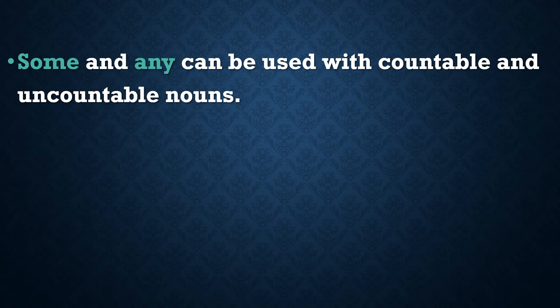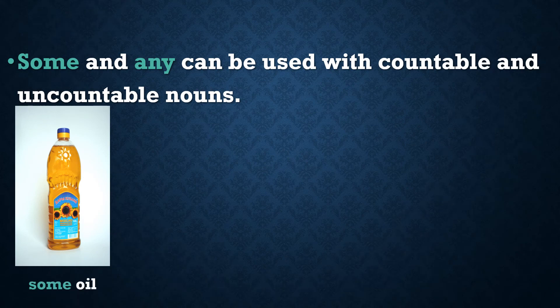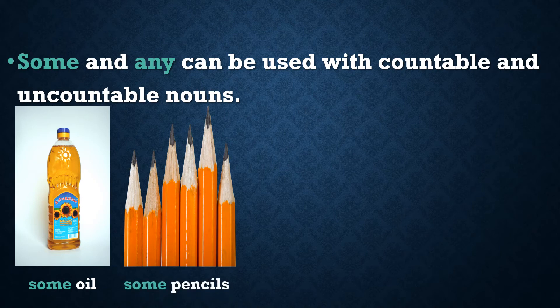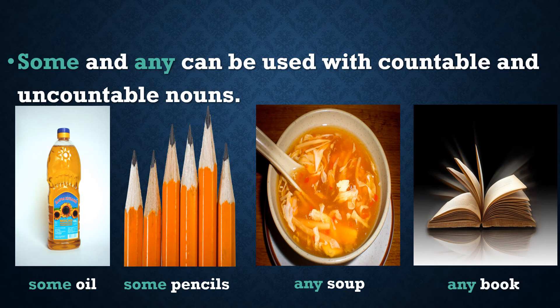Some and any can be used with both countable and uncountable nouns. For example, we can say 'some oil' — oil is uncountable — and we can also say 'some pencils' — pencils are countable. Similarly with any: we can say 'any soup' — soup is an uncountable noun — and 'any book' — book is a countable noun. So we can use some and any with countable as well as uncountable nouns.